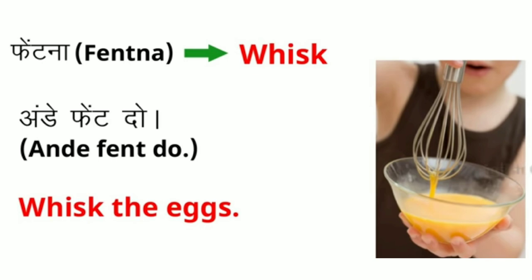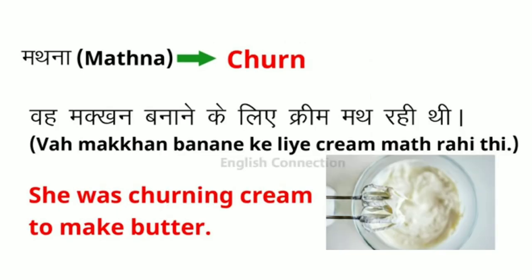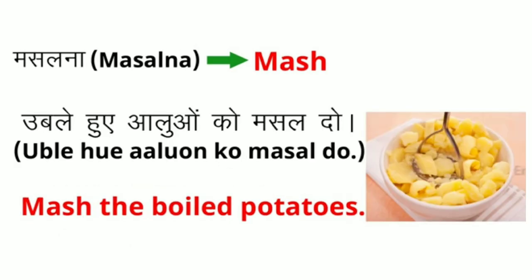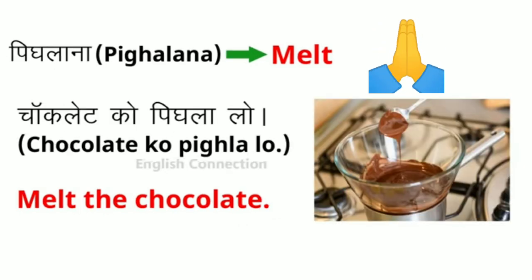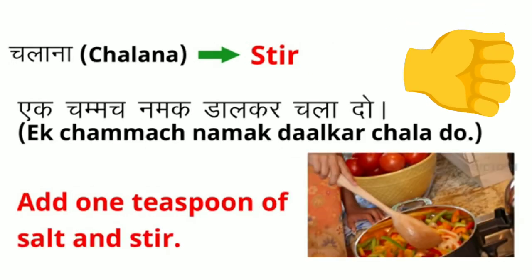Another example of 'whisk': whisk the eggs. The next word is 'churn.' Example: she was churning cream to make butter. The next word is 'mash.' Example: mash the boiled potatoes. The next word is 'melt.' Example: melt the chocolate. The next word is 'stir.' Example: add one teaspoon of salt and stir.